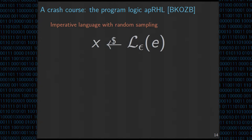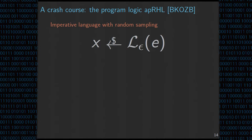Before talking about these features, let me give brief background on APRHL and approximate couplings. APRHL is a program logic. The language is a basic imperative language with one extra command for random sampling. This command says we take a sample from the Laplace distribution with mean e and parameter epsilon, and store the random sample into variable x. Besides this command, the rest of the language is completely standard: conditionals, assignments, sequential sequencing, and loops.